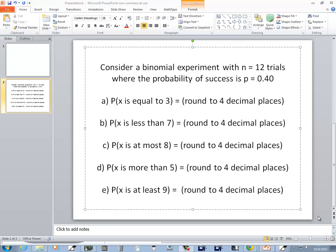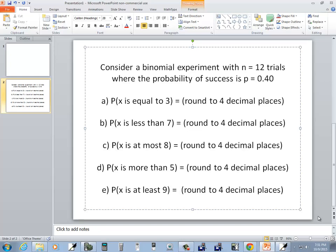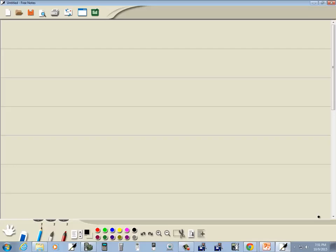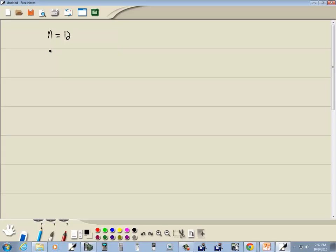Let's take a look at this problem. Consider a binomial experiment with n equals 12, where the probability of success is 0.4 or 0.40.